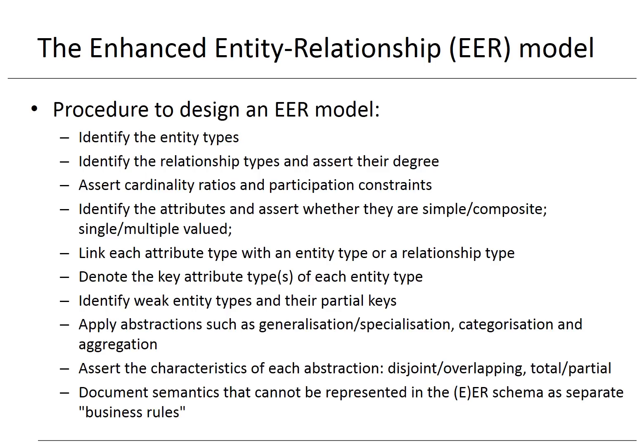An EER model can be designed according to the following steps: identify the entity types; identify the relationship types and assert their degree; assert the cardinality ratios and participation constraints; identify the attribute types and assert whether they are simple or composite, single or multiple valued; link each attribute type with an entity type or relationship type; denote the key attribute types of each entity type; identify the weak entity types and their partial keys; apply abstraction such as generalization, specialization, categorization, and aggregation; and assert the characteristics of each abstraction such as disjoint or overlapping, total or partial. Any semantics that cannot be represented in the EER scheme must be documented as separate business rules and followed up using application code.